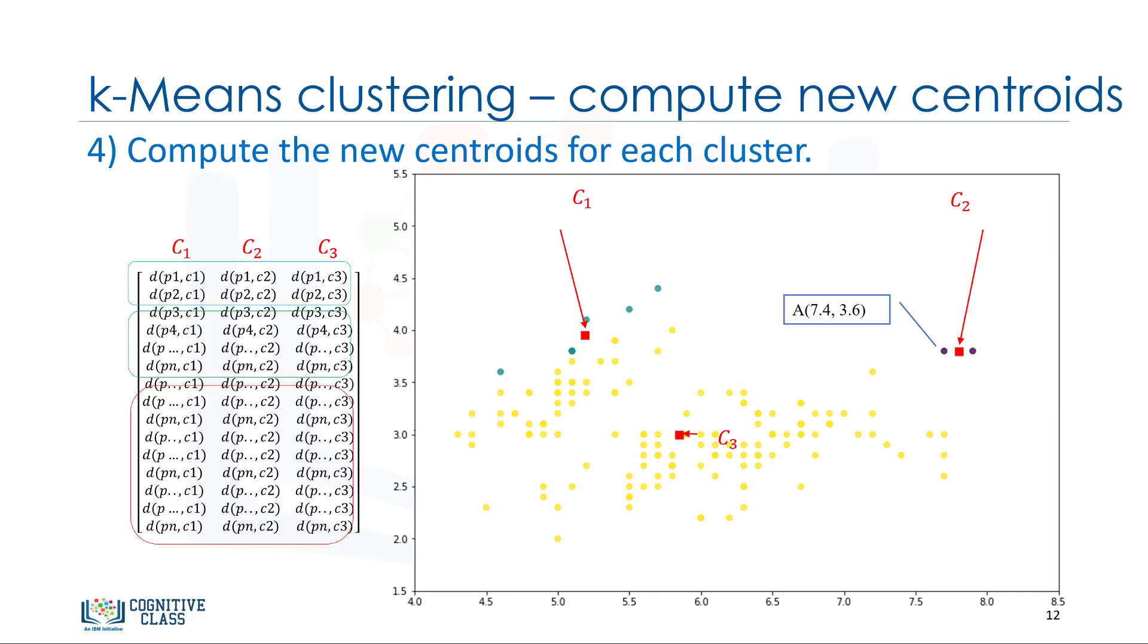For example, if point A coordination is 7.4 and 3.6, and point B features are 7.8 and 3.8, the new centroid of this cluster with two points would be the average of them, which is 7.6 and 3.7.